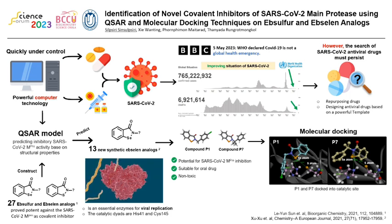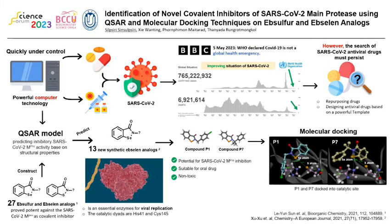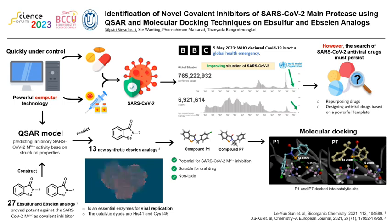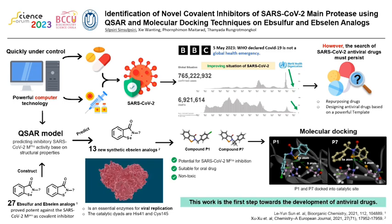Through further study, I used molecular docking to find the suitable orientation to form a covalent bond in the next-step reaction between the selenium atom of the compound and the sulfur atom of cysteine 145. And found that compounds P1 and P7 have the orientation that tends to support covalent inhibition.